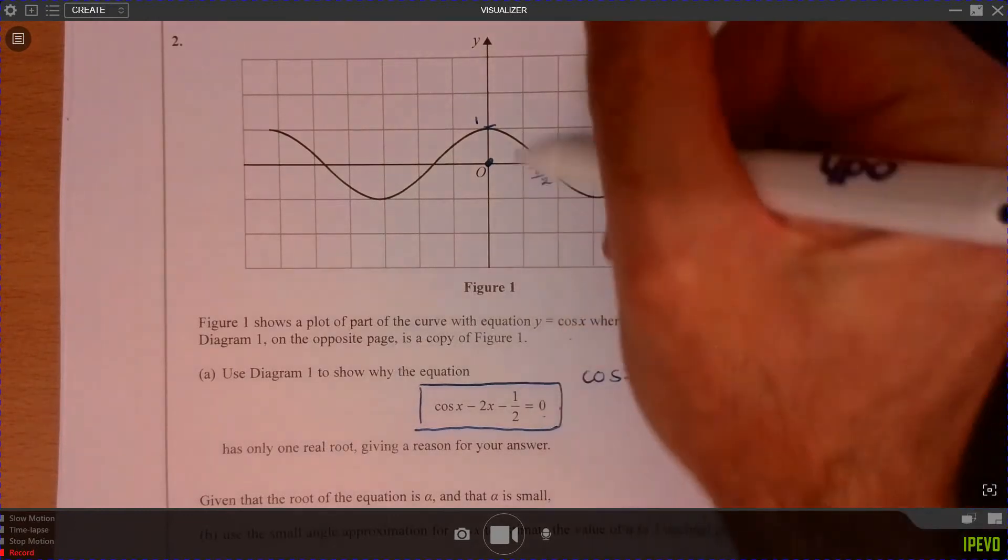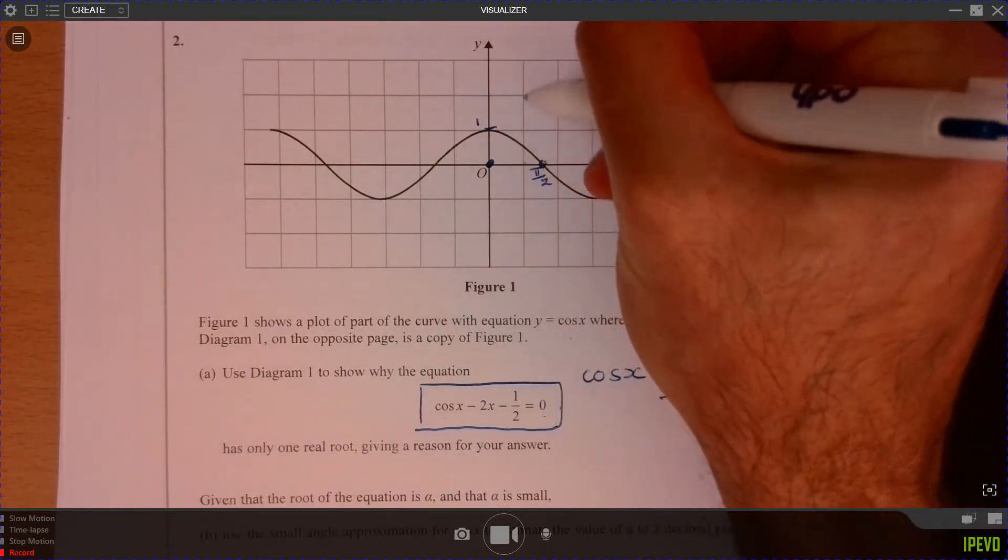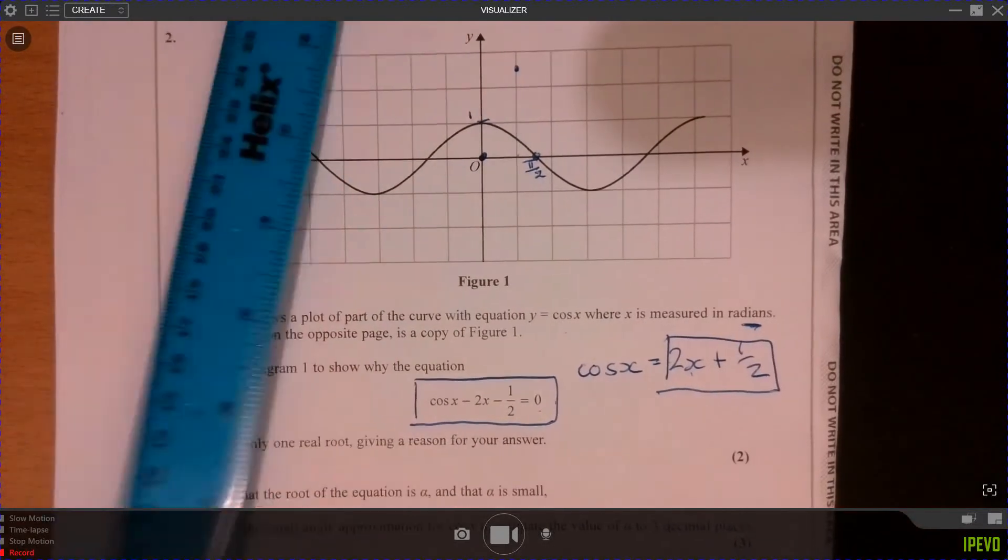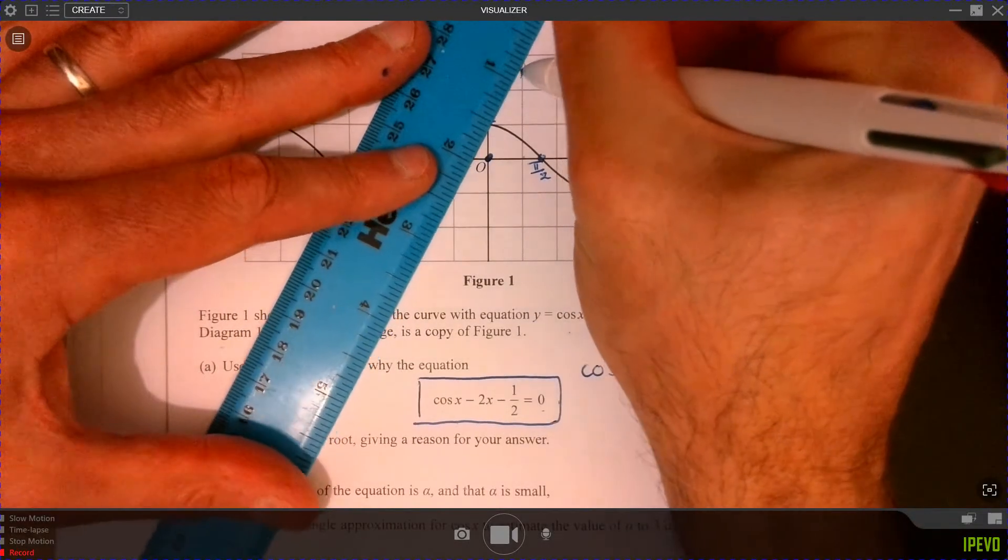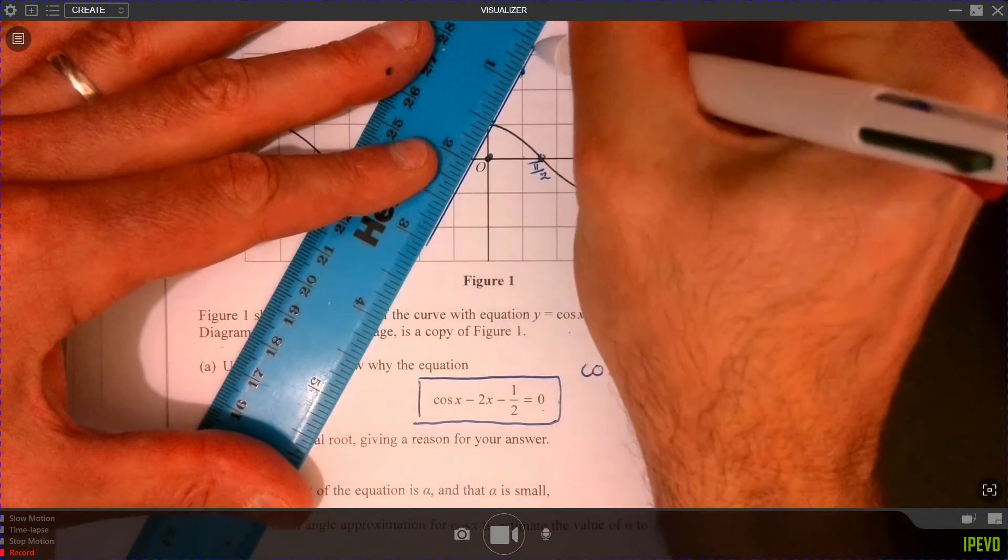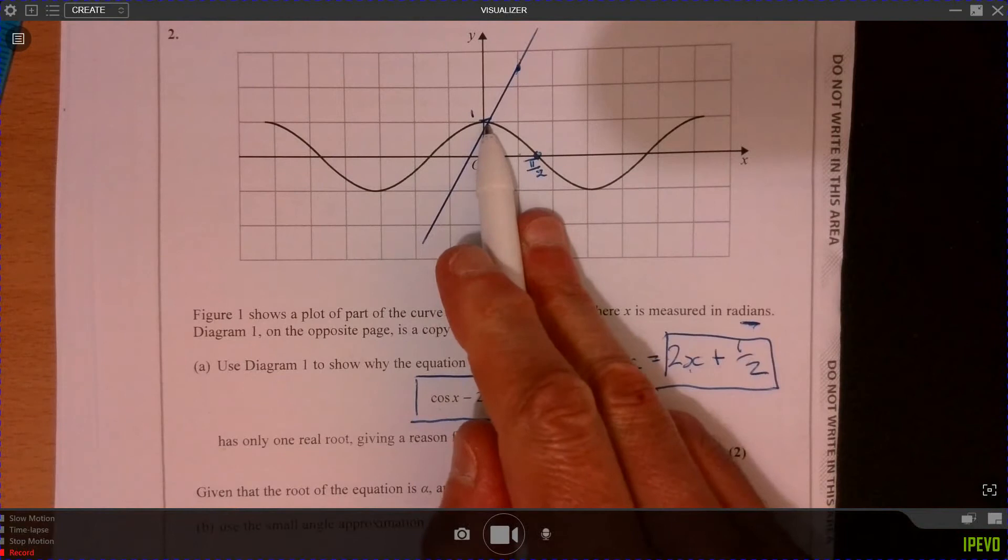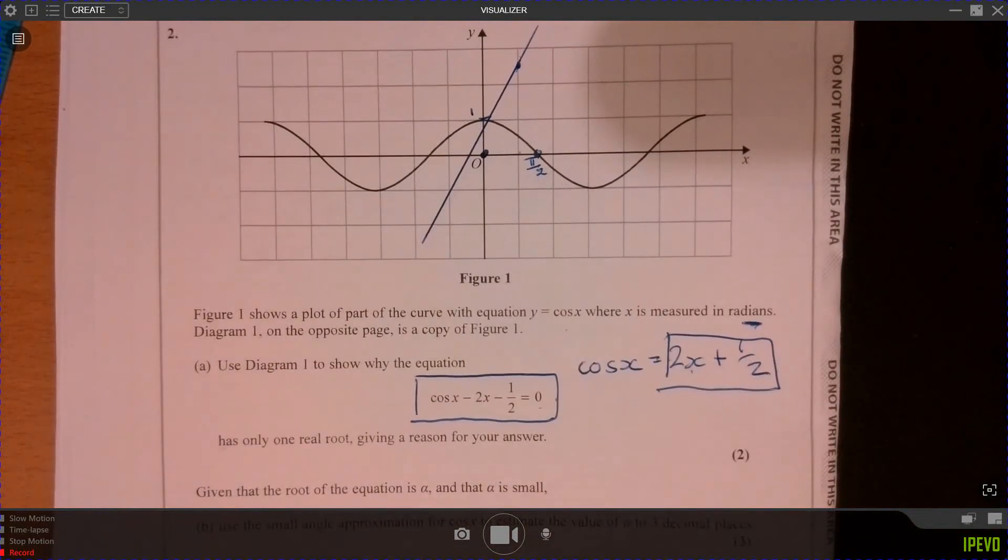So when x is 1, which is kind of about here, isn't it? So it's going to be up there somewhere. So all you need to be able to show here is that that's just going to be a straight line going over. We can see that there's one solution. That would be enough.